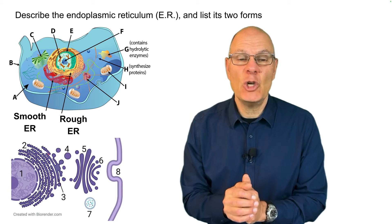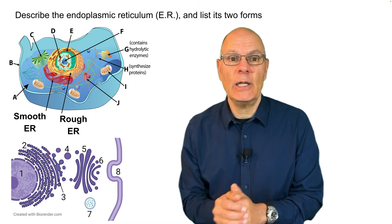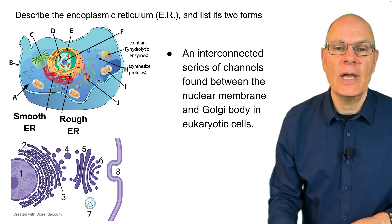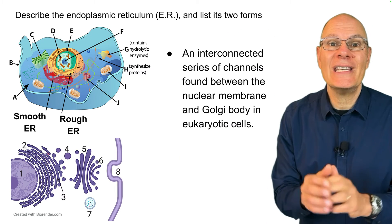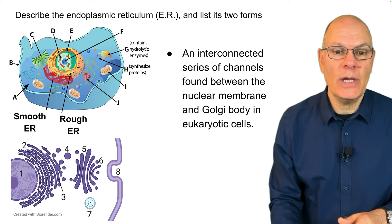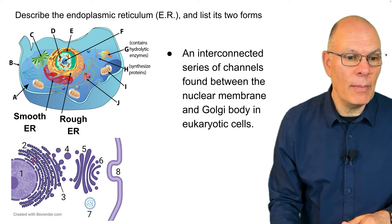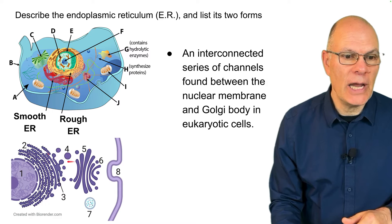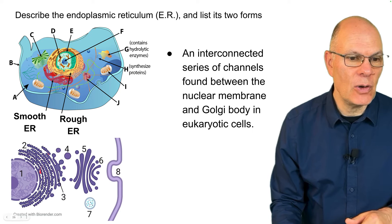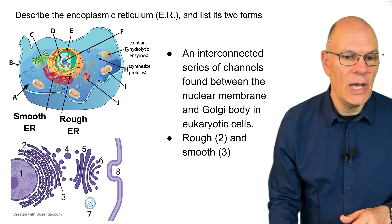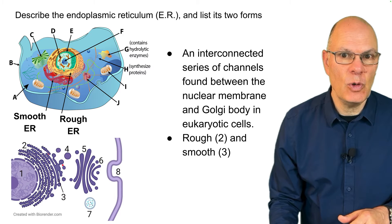The ER is an interconnected series of channels found between the nuclear membrane and the Golgi body in eukaryotic cells. It consists of two forms: the rough ER and the smooth ER.